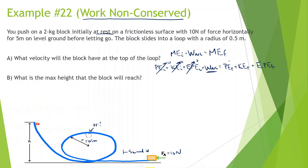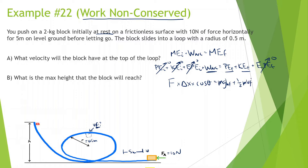At the end, is there potential energy? Yes, there is a certain height. Is there kinetic energy? Yes, it's going to be moving with a certain velocity — that's what we're looking for. Is there elastic potential energy? No. So work non-conserved equals force times displacement times cosine of theta equals mgh final plus one-half mv final squared.